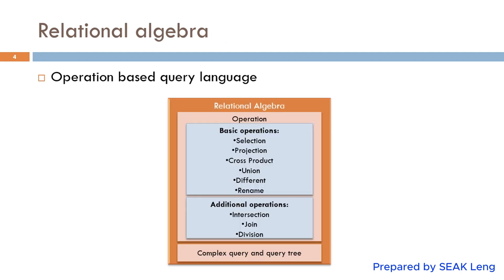Relational algebra consists of a set of operators that allow users to perform operations such as selection, projection, cross product, union, difference, or relations on instances. These operators can be combined to form complex queries that retrieve, filter, and manipulate data stored in a database.